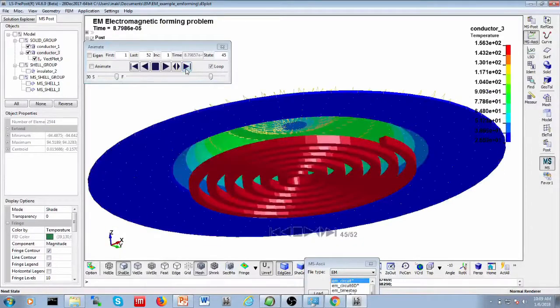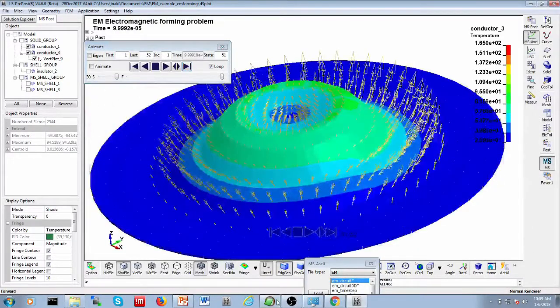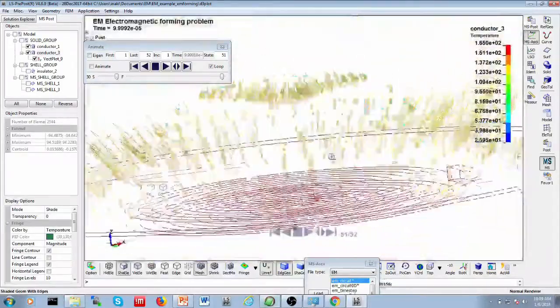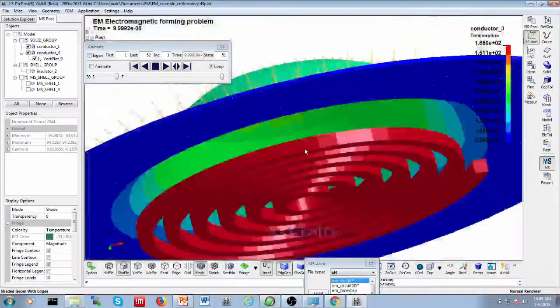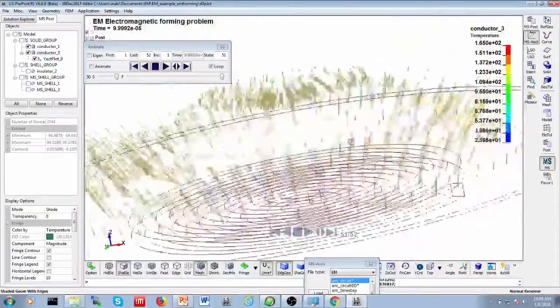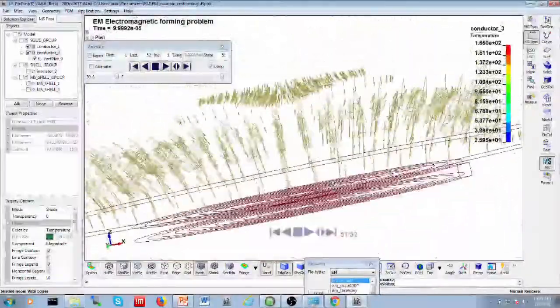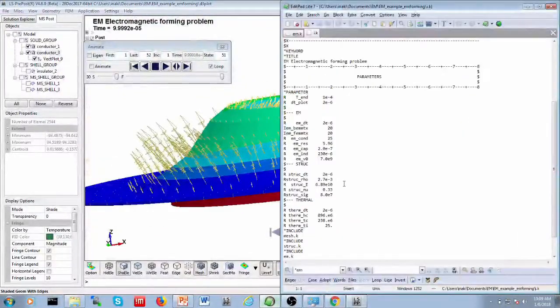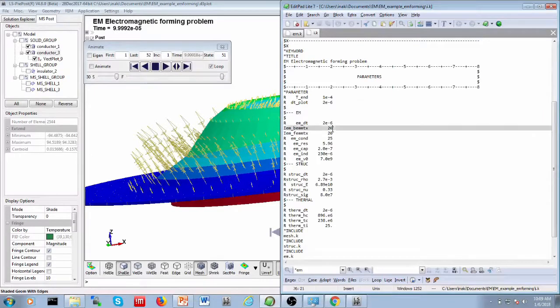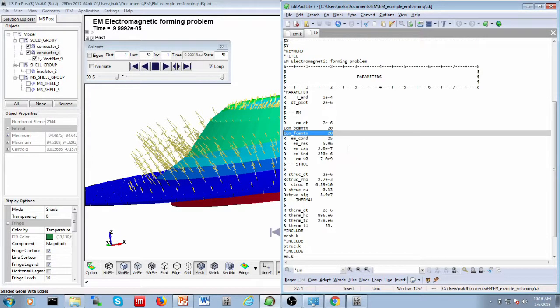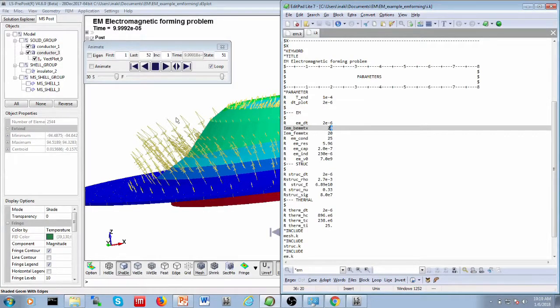So a couple of things that we can take a look at is, well first of all of course there is no air mesh, right? I mean this happens, the interaction between the coil and the workpiece is done by the BEM method. Next we can take a look at the FEM-BEM matrix recomputations, and so you see here that the user has decided, in this particular example, the FEM and BEM systems are being recomputed every 20 time steps. So with a time step of 2 to the power of minus 6, and an end time of 1 to the power of minus 4, it means that it will be recomputed something like 4 or 5 times during the run.